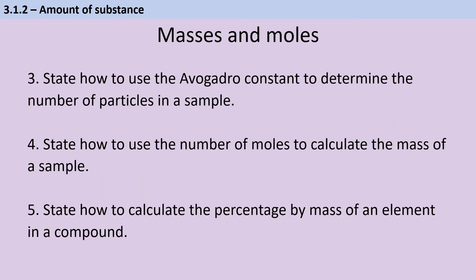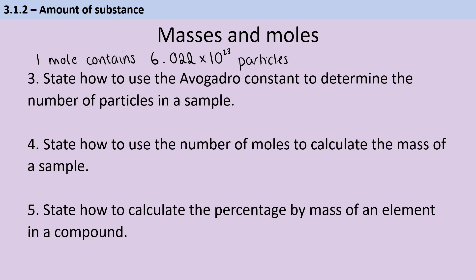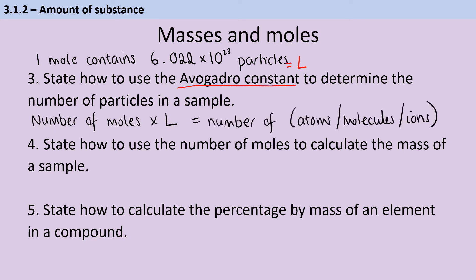One mole of any substance contains the same number of particles, namely 6.022 × 10²³, which in A-level exams they do actually give you, even though you had to memorise it for GCSE. That number is the Avogadro constant, sometimes represented by the letter L. So if I know the number of moles — say I have 5 moles of hydrogen — then to work out how many molecules I've got, I would simply multiply by Avogadro's constant. And that's the same whether we're talking about atoms, molecules, or ions.